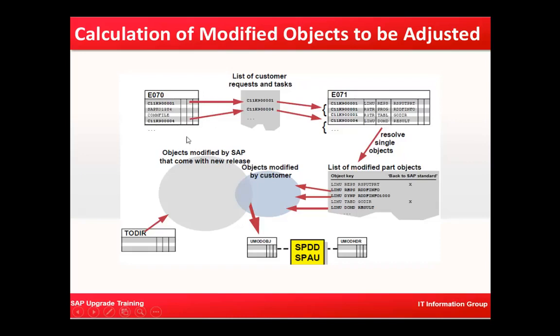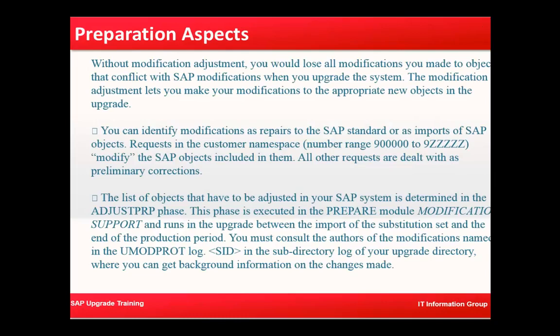The calculation of modified objects to be listed uses two tables — E070 and E071 — to find out and resolve any conflicts. Without modification adjustment, you would lose all modifications made to objects that conflict with SAP modifications when upgrading. The modification adjustment lets you make your modifications to the appropriate new objects in the upgrade. You can identify modifications as repairs to the SAP standard or as imports of an SAP object request in the customer namespace.